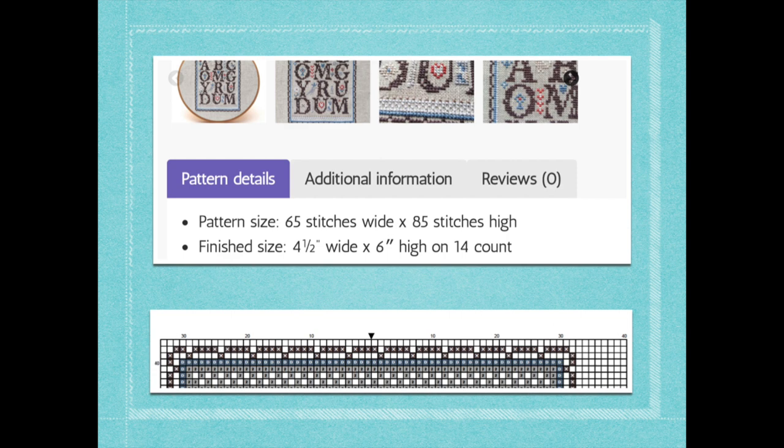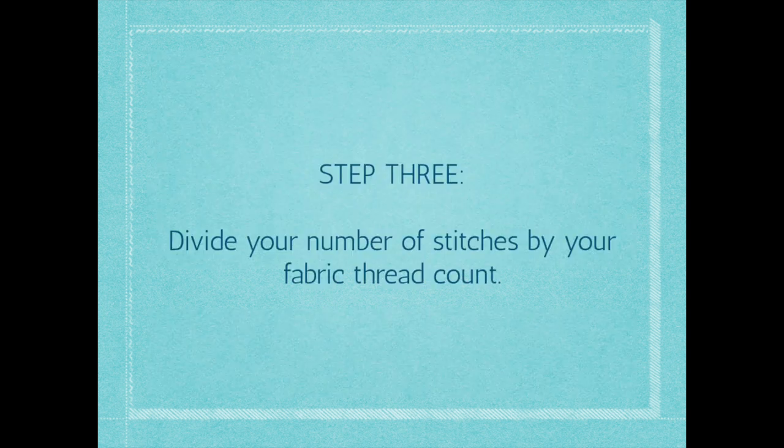So I want you to write the stitch count down on your piece of paper too — you've got your thread count, in this case 14, and your stitch count. This is how you do the calculation, and we're going to go through this so don't worry. You're going to divide the number of stitches by the thread count of the fabric. Nobody's allowed to panic — if you need to go get yourself a glass of wine, that's totally cool.